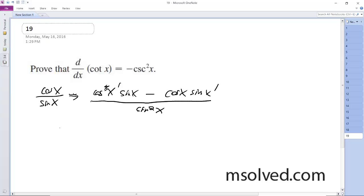Cosine of x becomes negative sine of x, so we get negative sine of x times sine of x, minus cosine of x times cosine of x, all over sine squared of x.